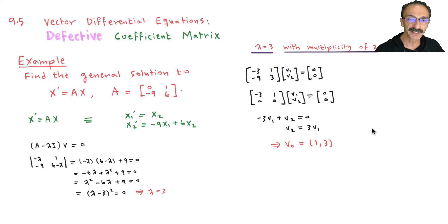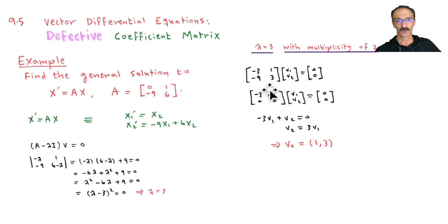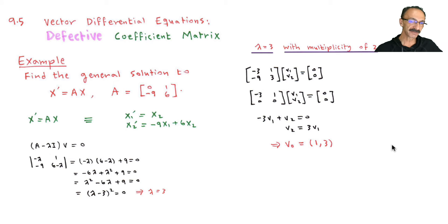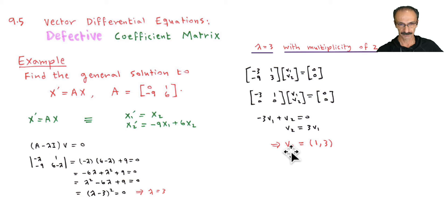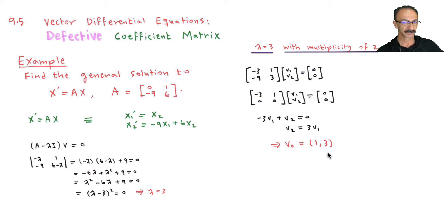Remember from section 9.4 — the bonus shortcut: [1, -3] and [1, 3] are switched and opposite in sign. If you can handle that shortcut, great; if not, just do the steps. Notice that we only got one vector v_sub_0 = [1, 3] for this 2×2 matrix, meaning we have only one eigenvector.